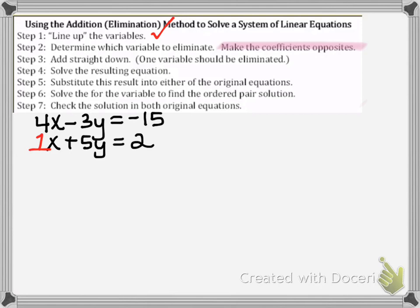So that is the variable you want to use in order to get the coefficients opposites. In the top equation, the coefficient is 4 for the 4x. So in the bottom equation where it's just 1x, it's easy for us to turn that into a negative 4x and then we'll have opposite coefficients.